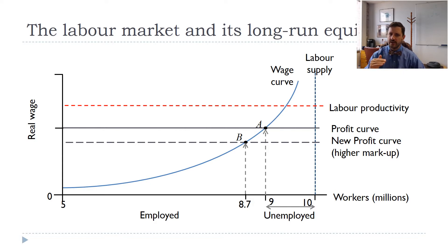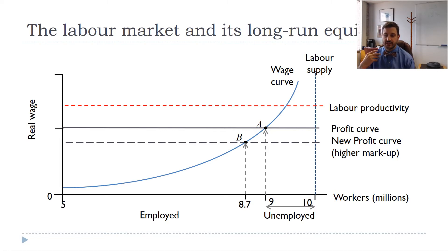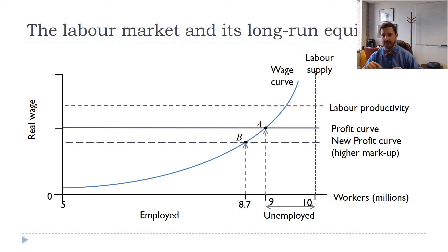With a higher markup, the real wage falls. We move along the wage curve from point A to point B and more people become unemployed. There is concern in the United States right now that we're seeing a decrease in competition in many industries, which is increasing firms' markups and profits. One important thing to note: the real wage falls as we move from point A to point B, but that doesn't necessarily mean the nominal wage falls. We'll talk about the difference between nominal and real wages more when we discuss inflation. The nominal wage is just how much you're paid in dollars per hour, while the real wage tells you how much you can buy.